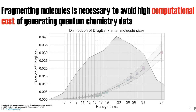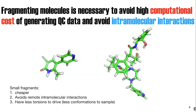So we want to fragment molecules to reduce computational cost. In addition, we also want to avoid intramolecular non-local through-space interactions that can convolute the torsion scan. We want the torsion scan to mostly capture the 1-4 interactions and the level of conjugation around the bond, with non-local through-space effects handled by other force field parameters such as non-bonded Lennard-Jones.